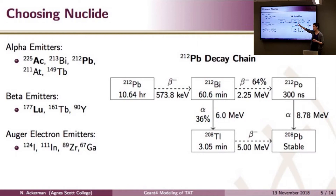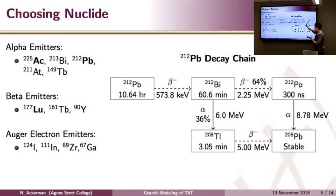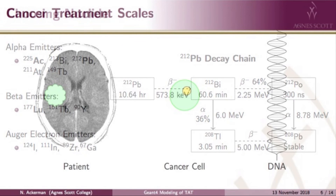The reason we use lead-212 rather than bismuth-212 itself is that bismuth-212 has a half-life of only about an hour — not enough time to generate the radioactive nuclide, do the radiochemistry, and get it into the patient. With a half-life of about 10.5 hours, lead-212 is quite practical as a therapy. Rather than just picking an isotope and doing mouse studies, our approach was to use computer simulations to first determine the best isotope to use, and then do mouse studies with it.